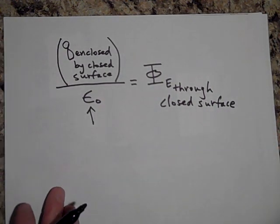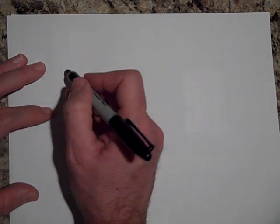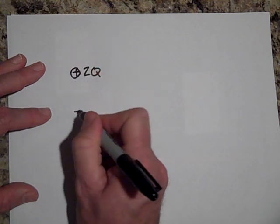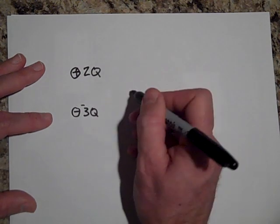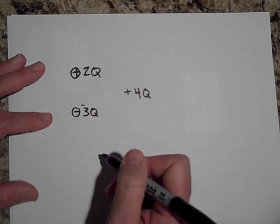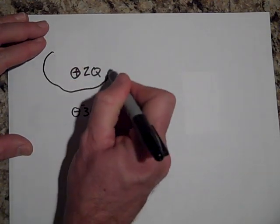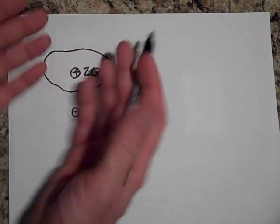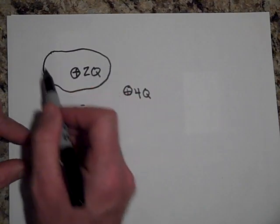And so what I'm telling you is, if you do have some weirdly shaped surface, let's put some charges in here. So we'll put in a positive 2Q right here and a negative 3Q right here and a positive 4Q right here. All right, now if I have a surface that looks like this, that's a closed surface, so it's almost like a lima bean shape, and it encompasses the 2Q.